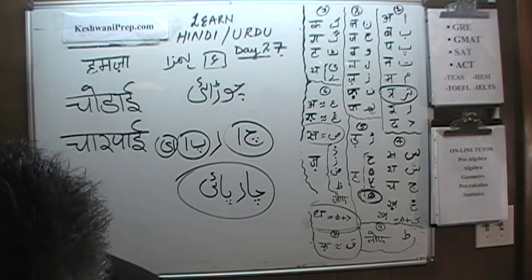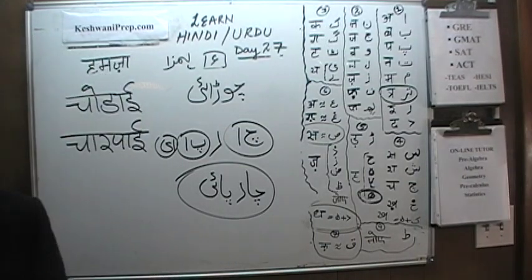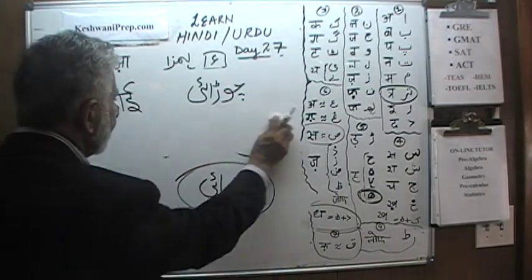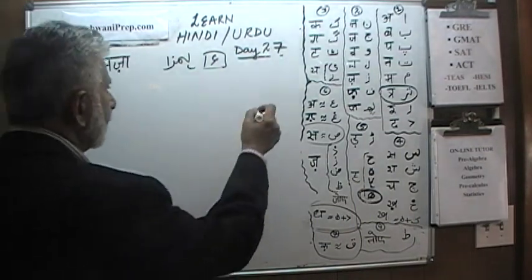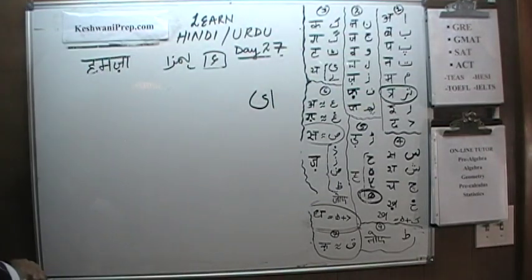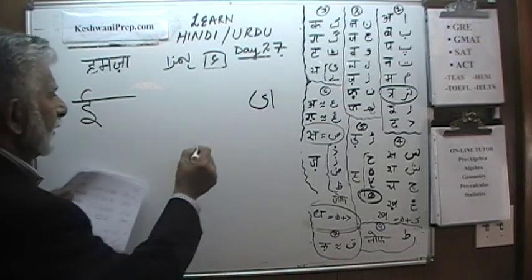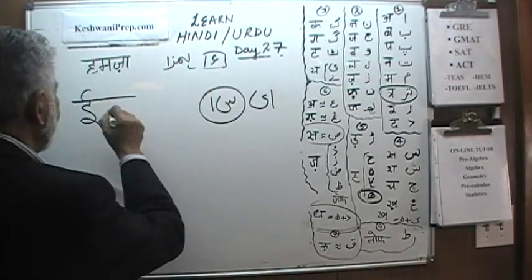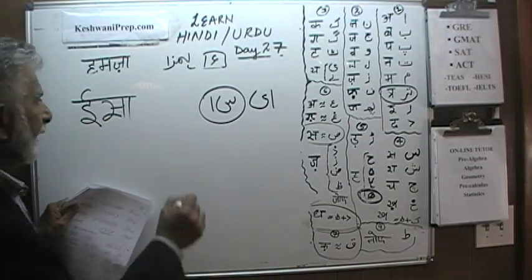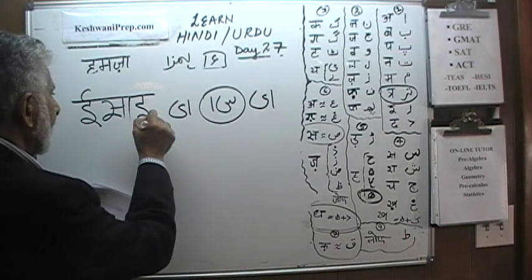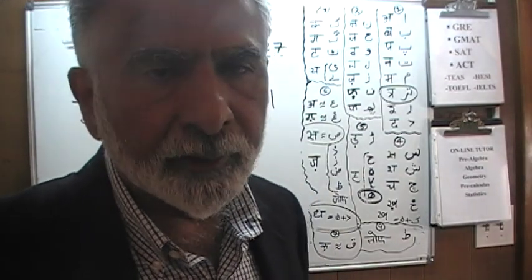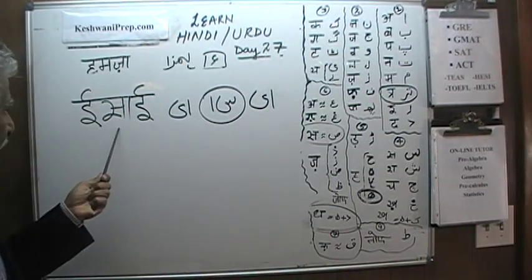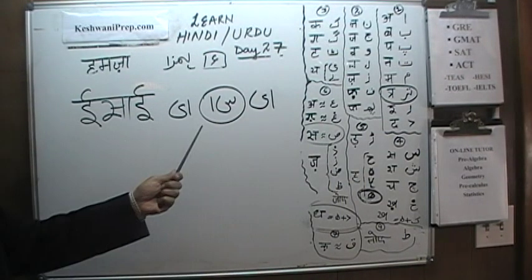Let's continue — now we go to the next page with more difficult words. The first one starts with E interestingly, then Sin and Aleph making 'Sa,' and ends with E also: 'Isai.' Do you know what 'Isai' means? 'Isai' is Christian — that's how we say Christian in Urdu. However, the spelling I wrote on the blackboard is wrong: 'Isai' does not start with Aleph.